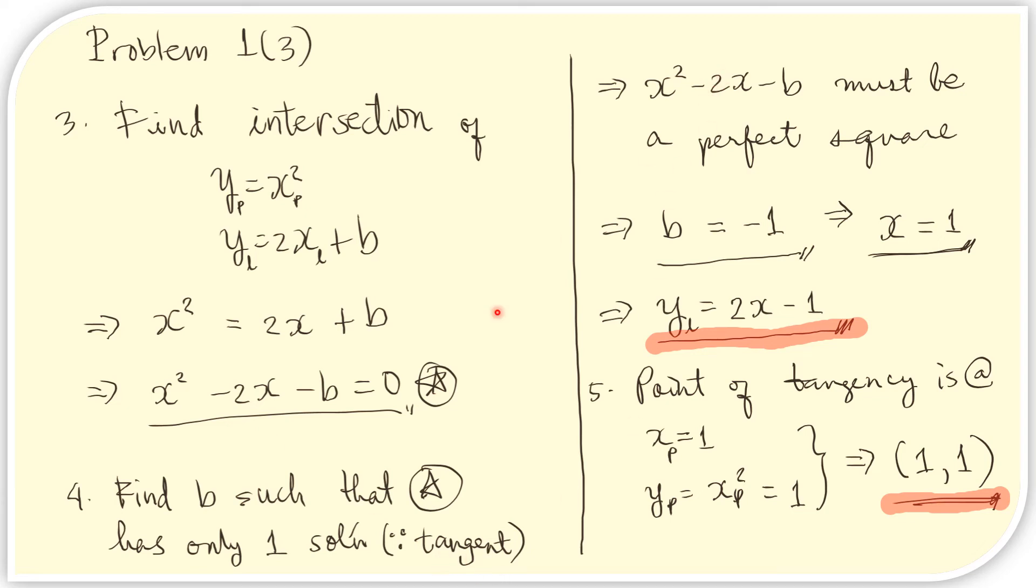the way we can get only one solution for this equation is for this expression on the left to become a perfect square. So we need to select b such that this becomes a perfect square. And that value of b is negative 1. And if we select negative 1 for b here, we notice that we have x squared minus 2x plus 1. And that is just the square of x minus 1. Therefore, x equals 1 if we select b to be negative 1.